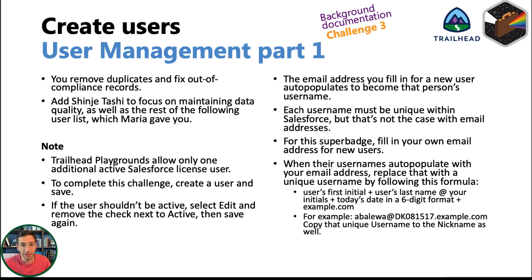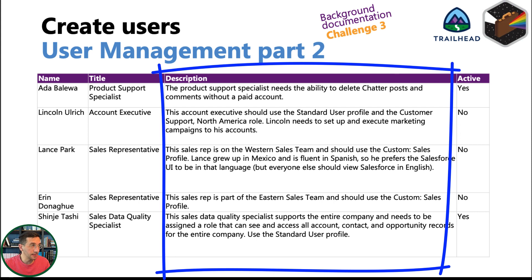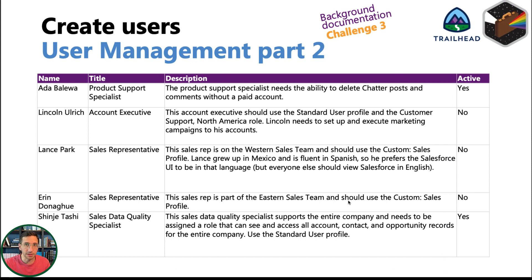For challenge three we get into user management. You're going to be removing duplicates, adding a user to focus on data quality, and there are notes about how to actually go about creating each of these users. If you've been following the trail mix, creating user accounts should be pretty straightforward. One thing to note: in the description it tells you what sort of license they need. Also, there are two types of Spanish — European Spanish and Latin American Spanish — so make sure you look out for that distinction.